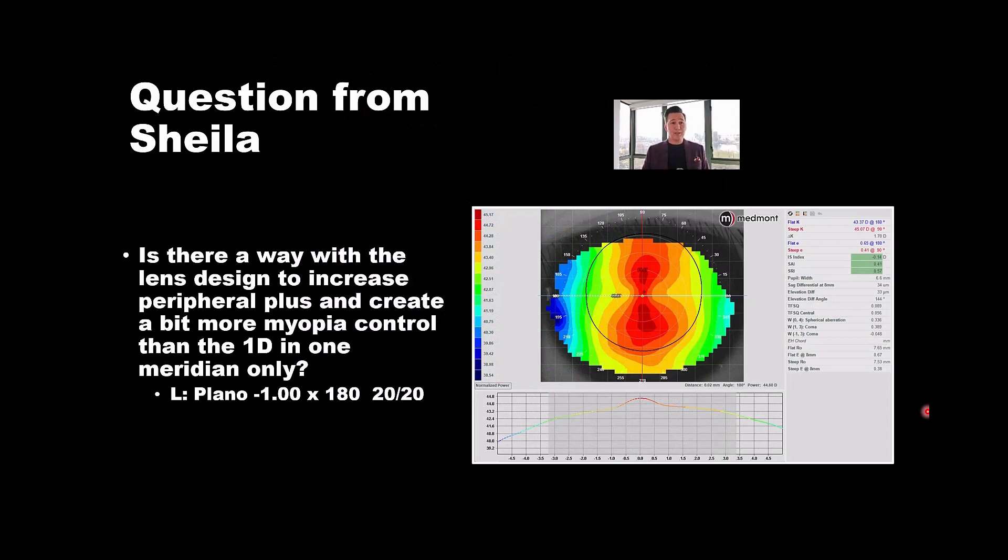Another great question from Sheila. Is there a way with the lens design to increase peripheral plus and create a bit more myopia control than the one diopter in one meridian only? So can we up the hydraulic force along one single meridian?